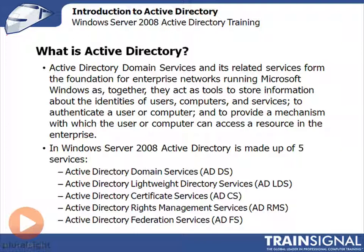Technically, a network can work by just having two computers talking to each other and sharing resources. But in the actual enterprise environment, we need to be more productive than just having a bunch of computers that share stuff with each other. We have to have some kind of centralized database, or central repository of information, and even central control of that information. Well, that's what Active Directory Domain Services is.